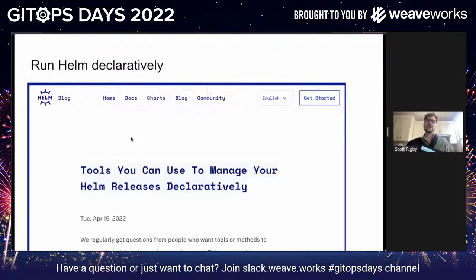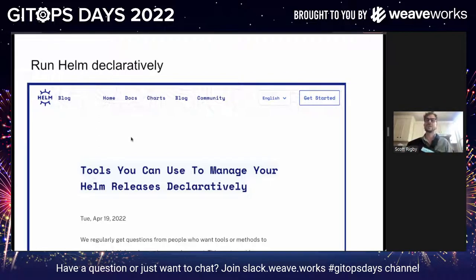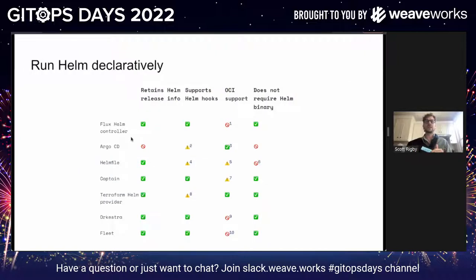For the first topic, running Helm declaratively: Matt Farina and I wrote a blog post on this topic fairly recently, maybe almost two months ago. In it, we cover why Helm doesn't have tools to do this out of the box, what the differences are between declarative and imperative, and we list tools in the Helm ecosystem — both CNCF projects and other projects — that do this. We end with a high-level tool comparison that has a feature table and footnotes.